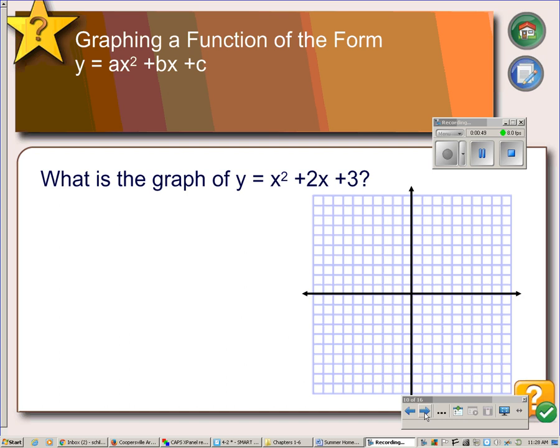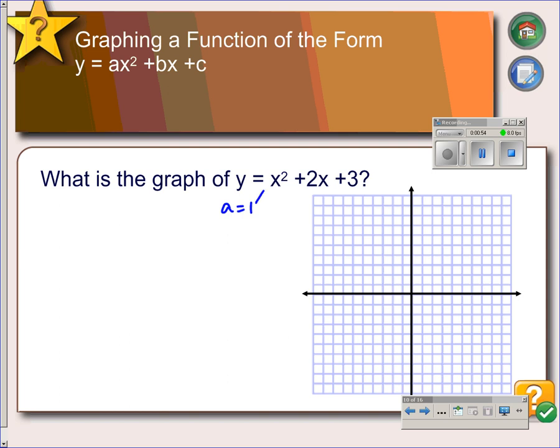So here is an example. In this quadratic equation a equals 1, and that number is coming from right here in front of x². Since there's nothing there it's automatically 1. b equals 2 and c equals 3. So to find the axis of symmetry using our formula negative b over 2a, we would have negative 2 over 2 times 1, which is negative 1. So I know we have an axis of symmetry right here at x equals negative 1.